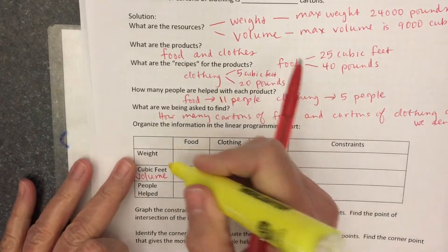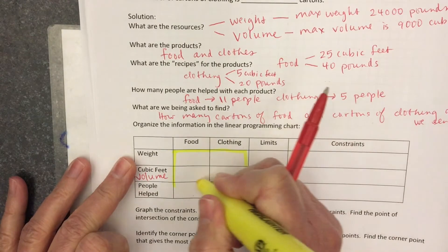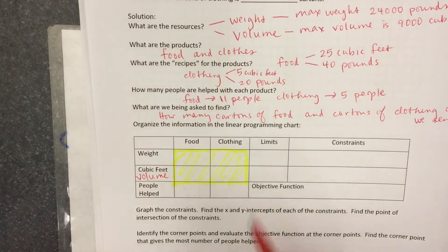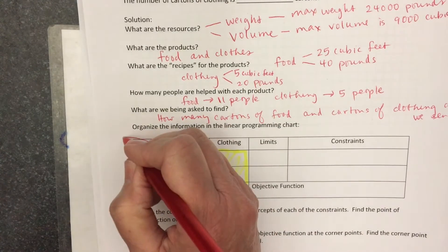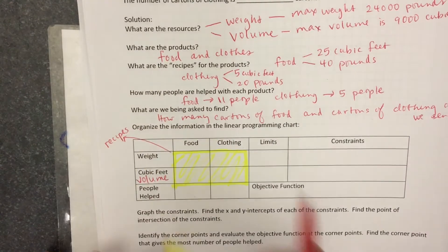I'm gonna mark that off, highlight that in yellow, and I'm gonna say, I'll put a little arrow, that's the recipes in yellow.